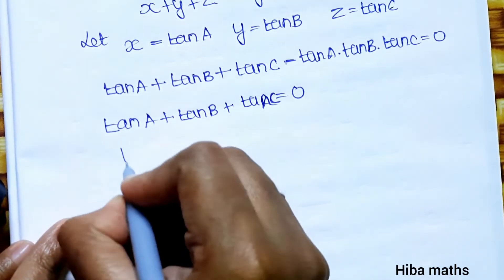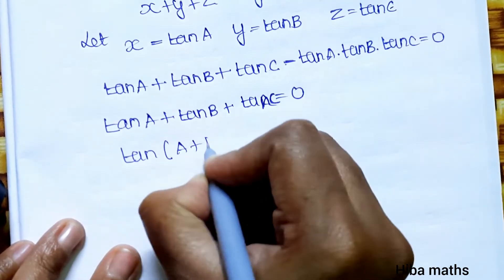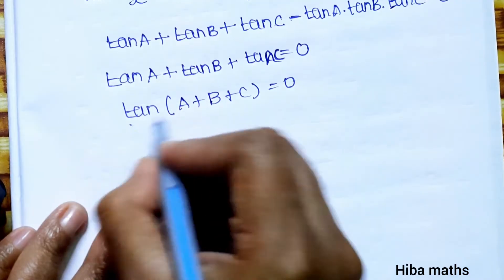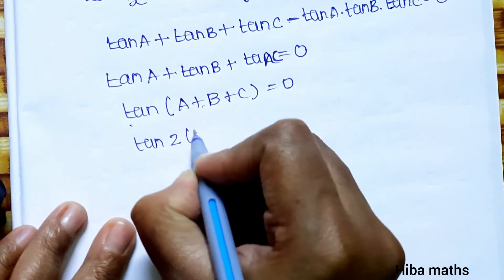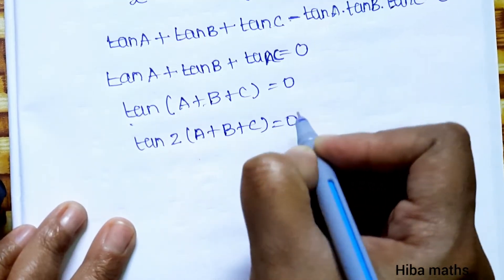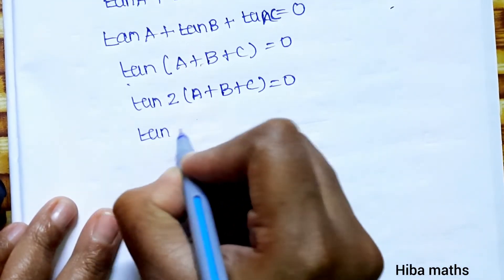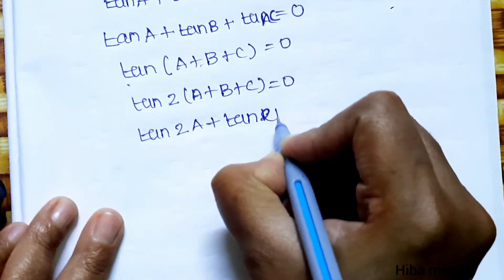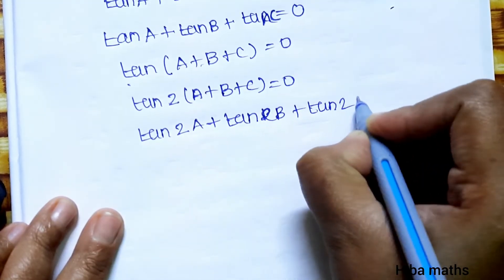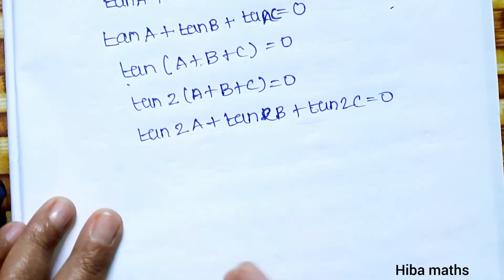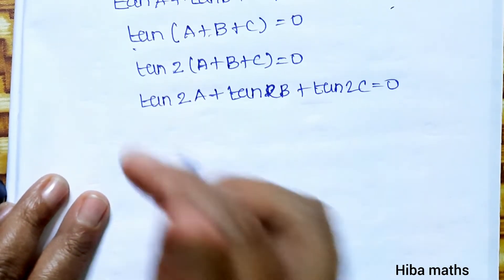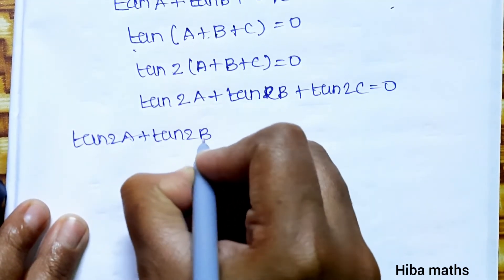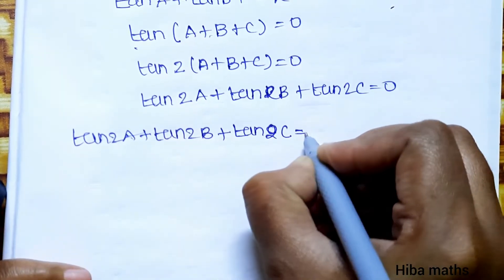This means tan(A plus B plus C) equals 0, so A plus B plus C equals 0. Now using the double angle: tan 2A, tan 2B, and tan 2C. We let the angles be 2A, 2B, 2C, so 2A plus 2B plus 2C equals 0. Therefore tan 2A plus tan 2B plus tan 2C equals tan 2A times tan 2B times tan 2C.